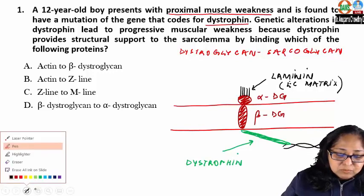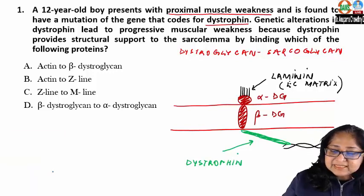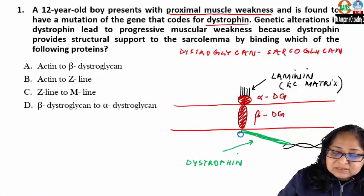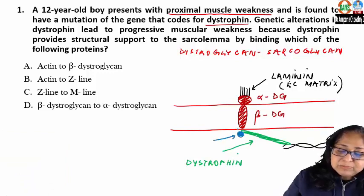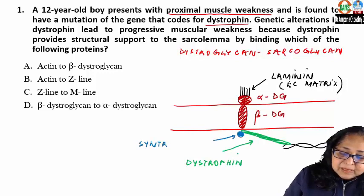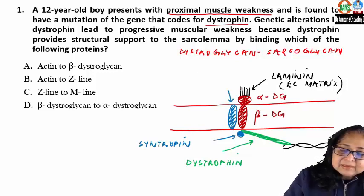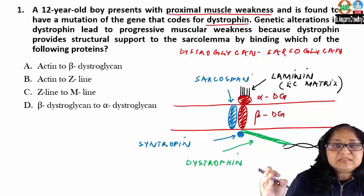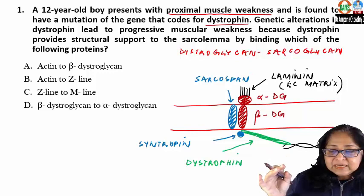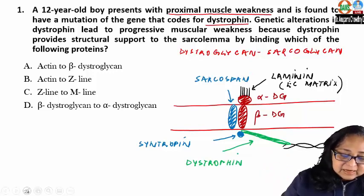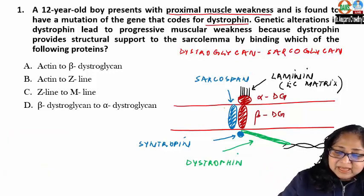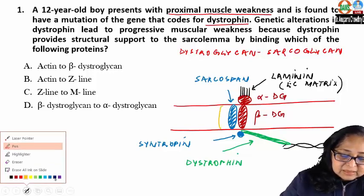There are a few more sarcolemma proteins. One is called sintropin, which is a globular protein. Another is sarcospan. And there is also sarcoglycan.